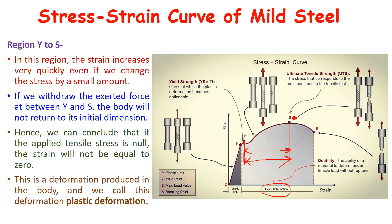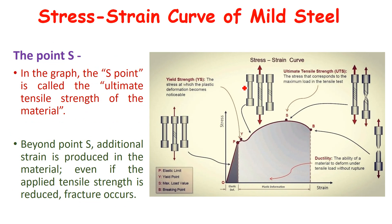Point S is called the ultimate load point of the material, or it also gives you the ultimate tensile strength of a material. Beyond point S, additional strain is produced in the material. If you look at the curve beyond point S, it is going down — it means stress is decreasing but strain is increasing.